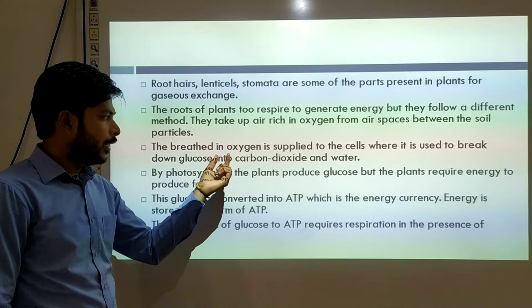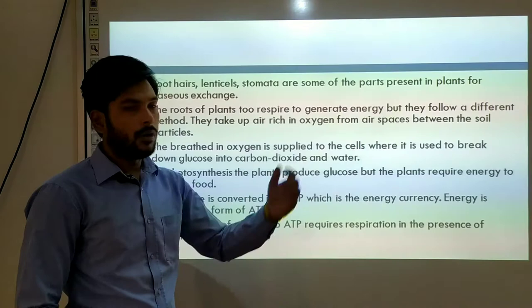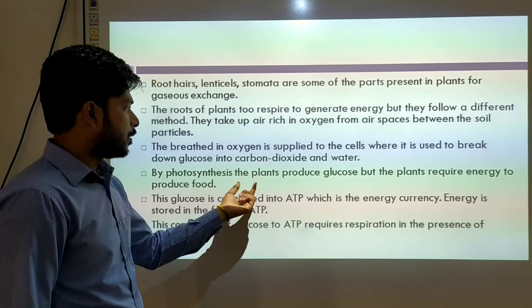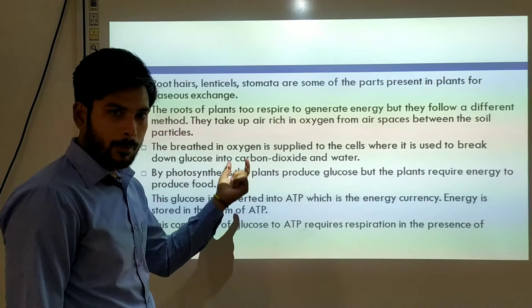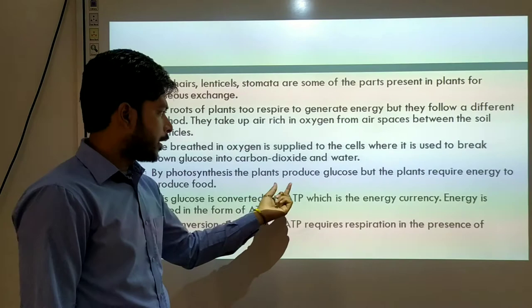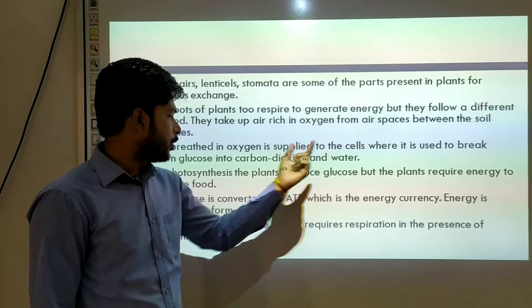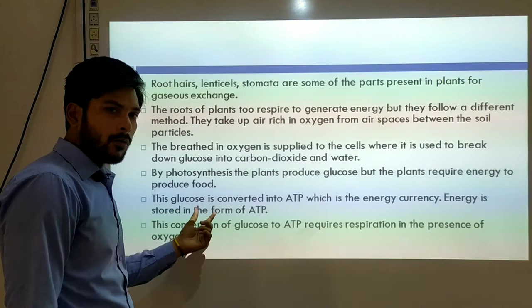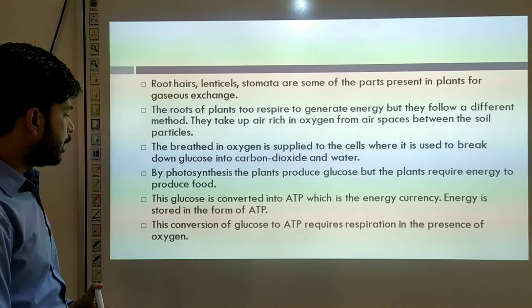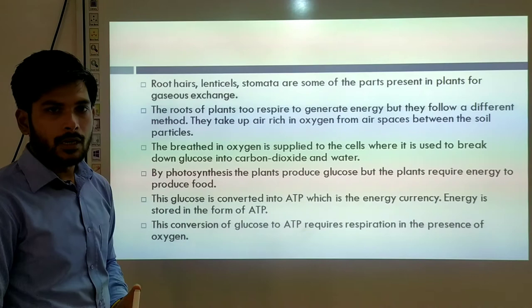The breathing oxygen is applied to the cell where it is used to break down glucose into carbon dioxide and water. By photosynthesis, the plant produces glucose, but plants require energy to produce food. In respiration, glucose breaks down and ATP — energy — is produced. Photosynthesis mein glucose banta hai aur respiration mein glucose ka breakdown hota hai.